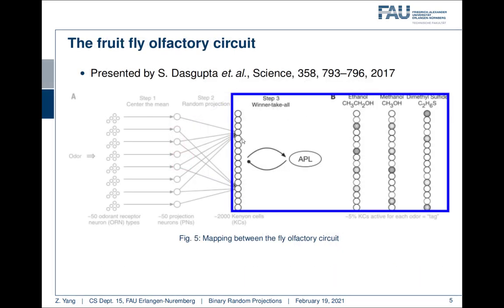And at last we need to do this winner-take-all procedure which just takes some percentage of the most activated neurons and sets the others to zero.